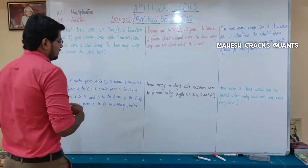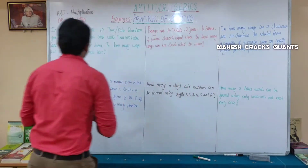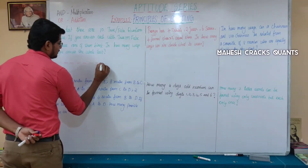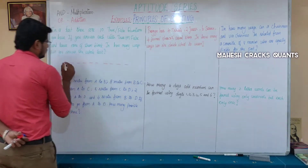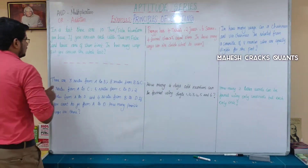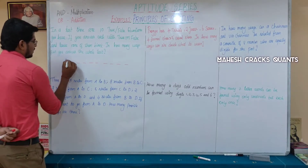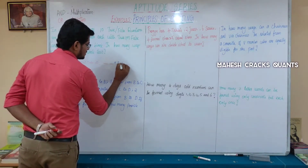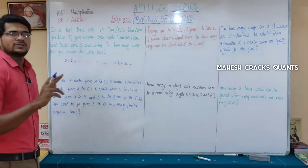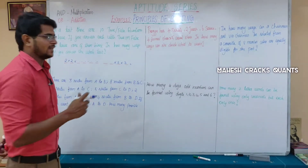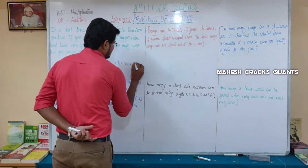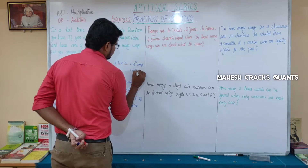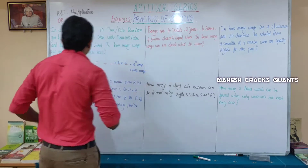So for the first question, there are two ways. For the second question, two ways, and so on for all 10 questions. Multiplying the choices together gives the total number of ways to answer the whole test.